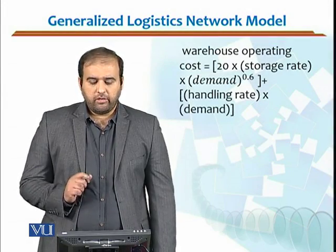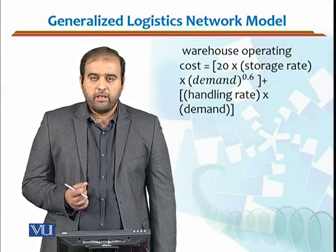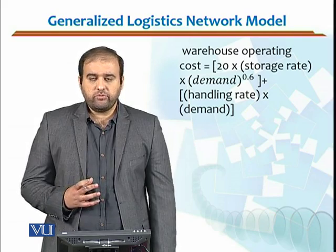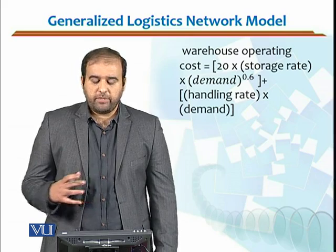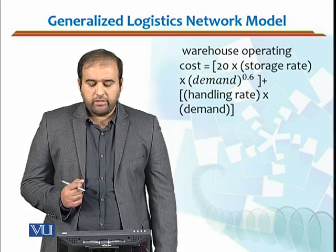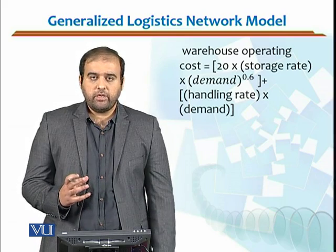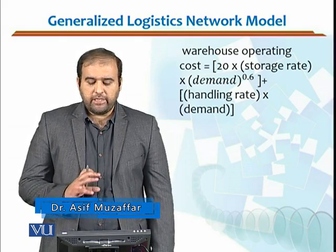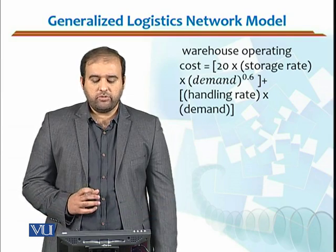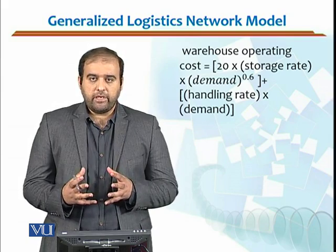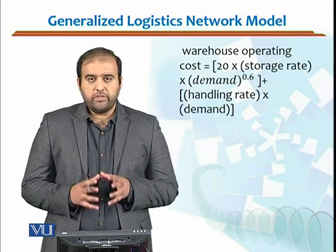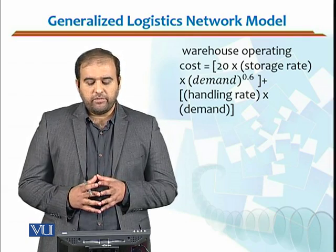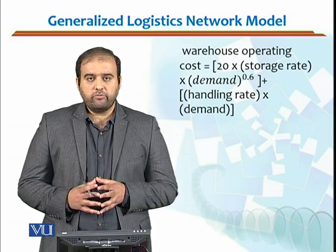Let me give you a generalized logistic network model related to warehousing. The standardized formula for warehouse operating cost would be: 20 times the storage rate, multiplied by demand raised to the power 0.6 — meaning at least 60% of demand is accommodated — plus the handling rate multiplied by the demand. This is a generic formula for warehouse operating cost that can be implemented in any warehouse, requiring your storage rate, demand, and handling rate.